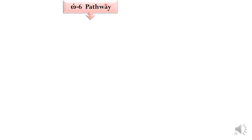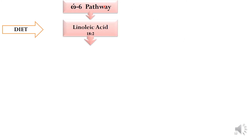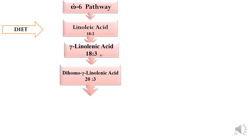Now we shall look at the omega-6 pathway. Through the diet, the essential omega-6 fatty acid linoleic acid is received. Through biochemical reactions in the body it converts to gamma-linolenic acid, which is an 18:3 omega-6 fatty acid. Through the action of enzymes, gamma-linolenic acid is now converted to dihomo-gamma-linolenic acid, which is a 20:3 omega-6 fatty acid — meaning it has 20 carbon chains and 3 double bonds.